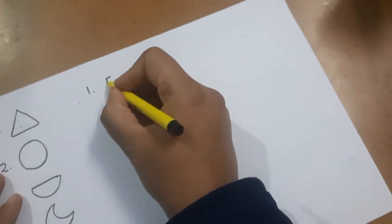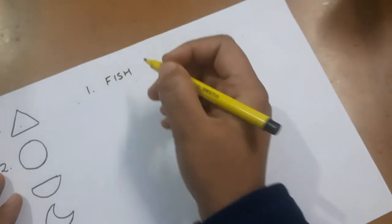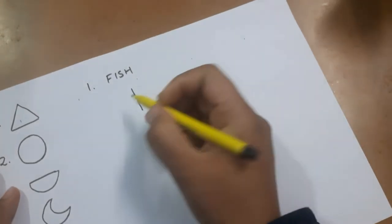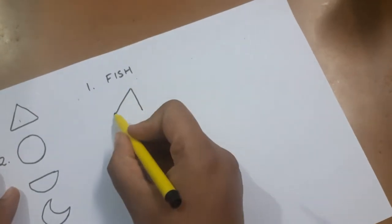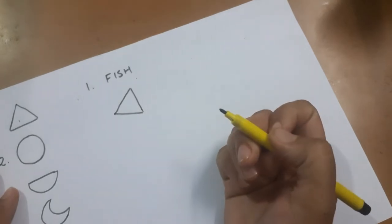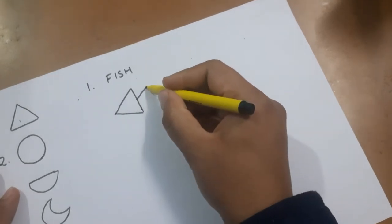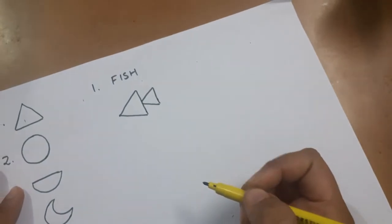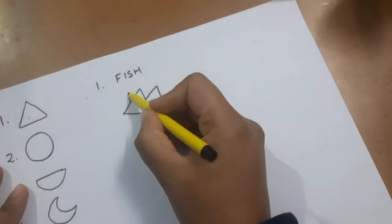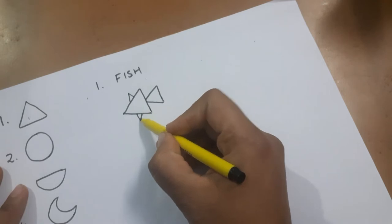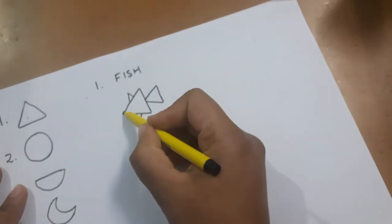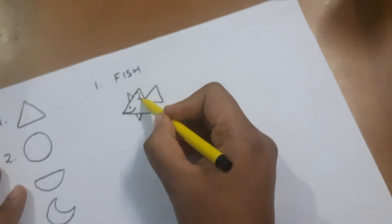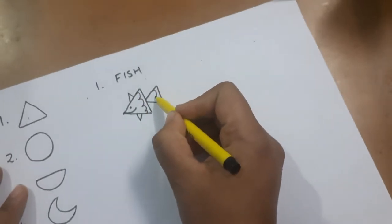So the first sea creature that we're learning is how to make a fish. You'll make a standing line and then convert it into a triangle like this, and add another small triangle at the back. Now I'm making a V-like shape to make the fins, and again V at the bottom. Add a smile and an eye. You can add a design of your choice like this.